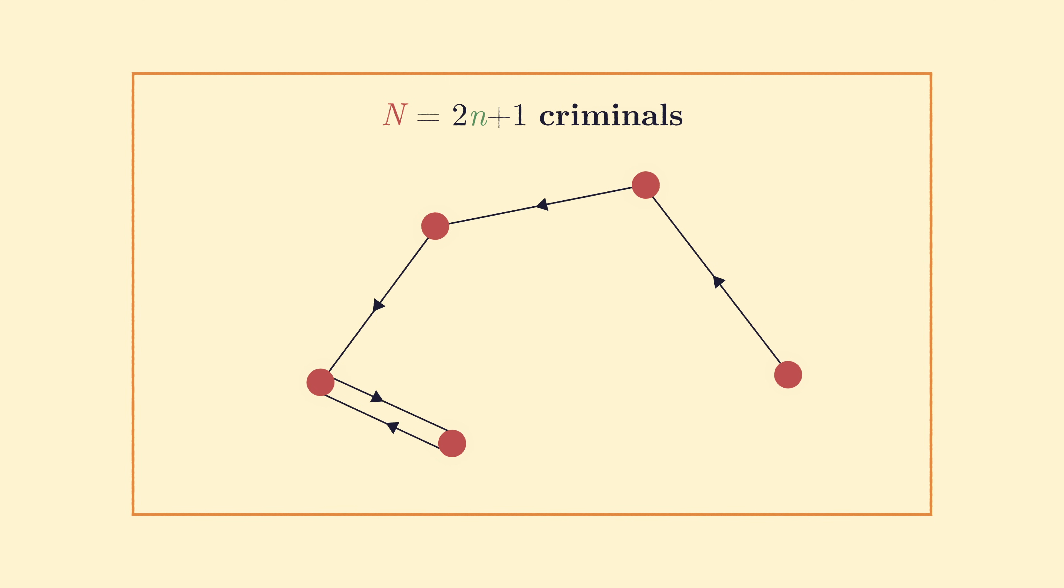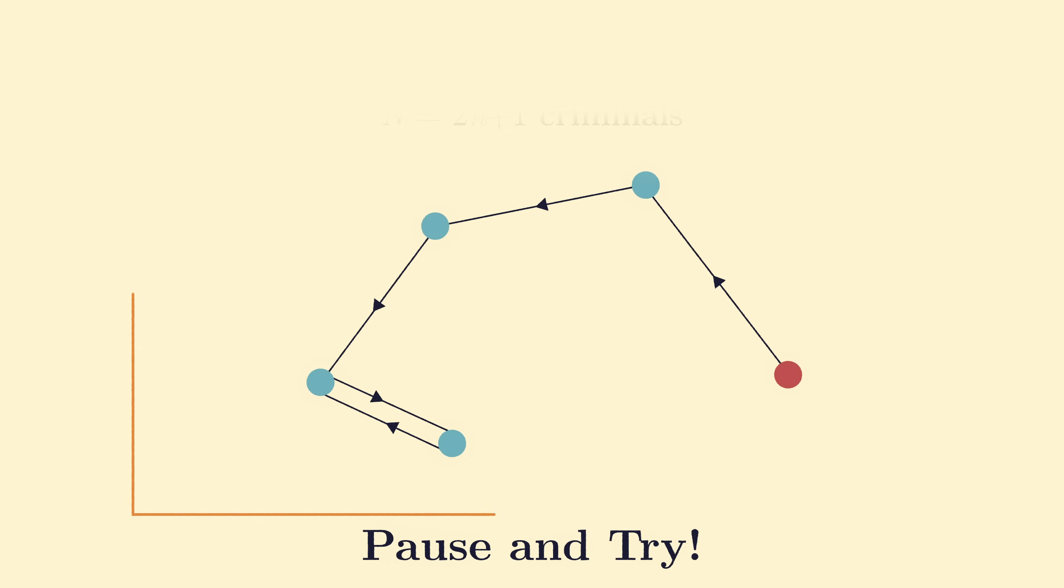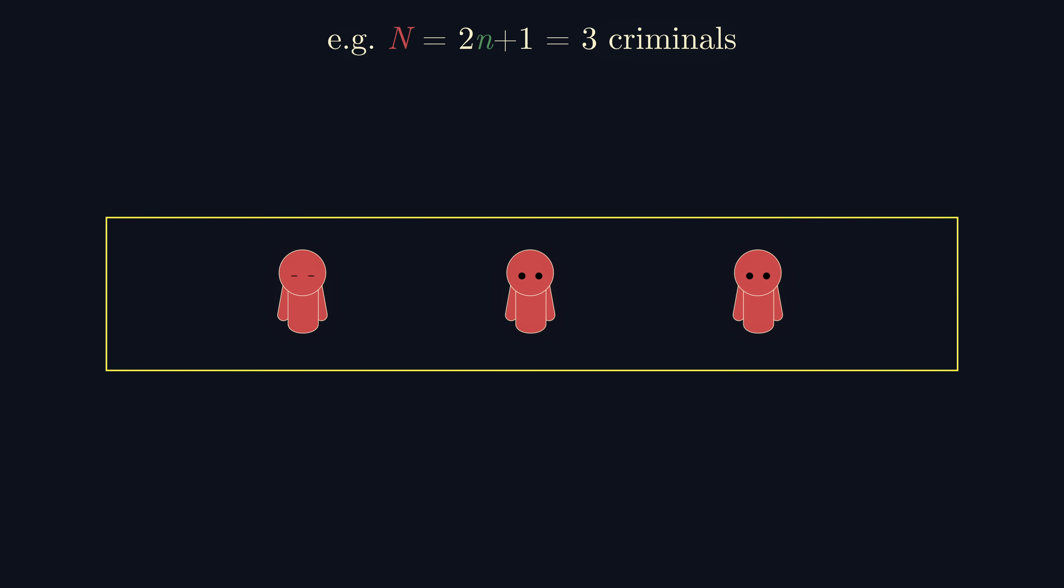Prove that there's always at least one criminal who is unwatched by any other criminal. Before we get into solving, I encourage you to try this problem yourself and pause at the key breaks in chapters to complete the proofs independently. To get a better feel for the problem, it makes sense to look at small cases with a small number of criminals.